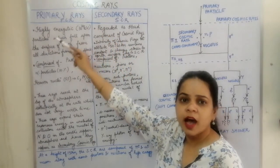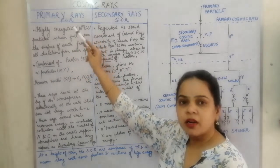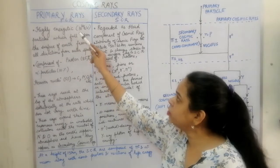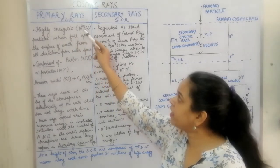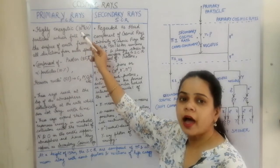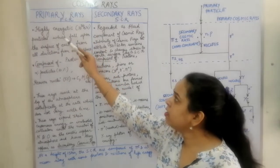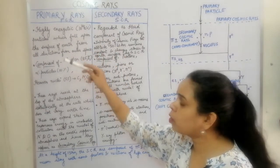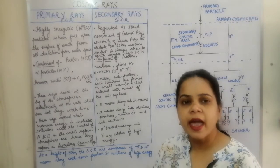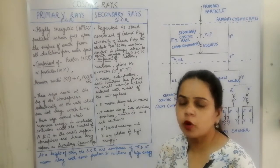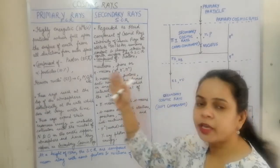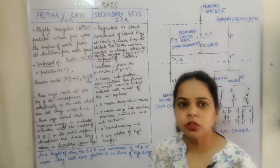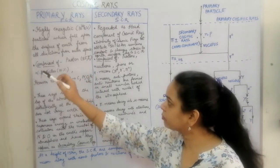The primary rays are highly energetic particles in the cosmic rays and they possess energy of 10 raised to the power 20 electron volts. This is quite a high value of energy, and these high energy particles are falling upon the surface of the earth from outer space in all directions. These constitute the primary rays.